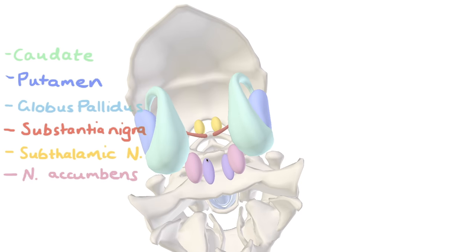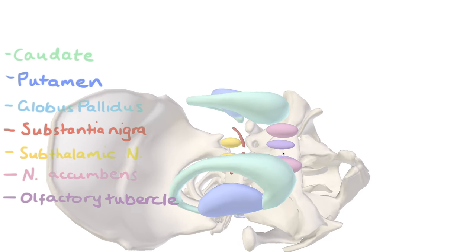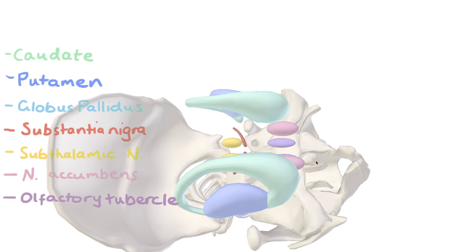Last but not least, we have the olfactory tubercle up the front here, which projects to the olfactory bulb at the top of your nasal cavity.